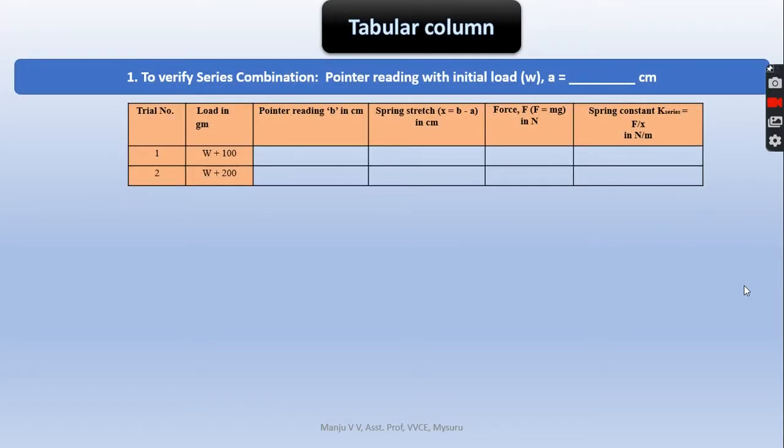Now we have the table column. With the dead load, whatever extension is produced, note it here, call it as A. With 100 grams of weight, pointer reading, call it as B. And take the difference between A and B. You will get the spring stretch - express it in cm. Now F equals mg, a force. Measure it and express it in Newton.